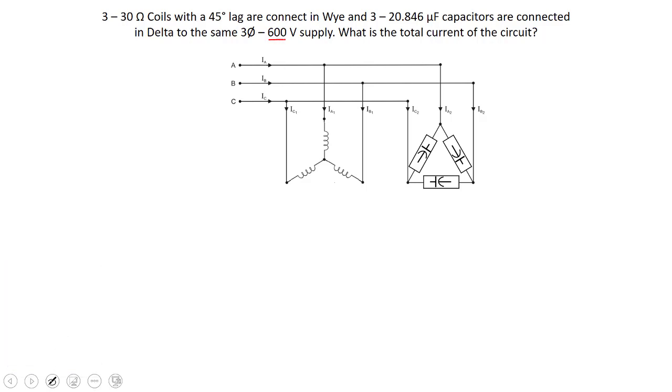So we're going to have to determine our phase voltage first. V phase equals V line divided by root 3, so in this case 600 volts divided by root 3.